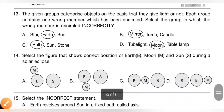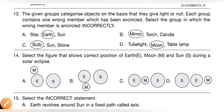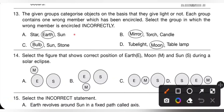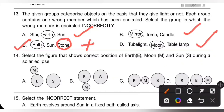13th question: the given groups categorize objects based on whether they give light or not. Each group contains one wrong member which has been encircled. Select the group in which the wrong member is encircled incorrectly. Options A (star, earth, sun), B (mirror, torch, candle), and D (tube light, table lamp, moon) are encircled correctly. Option C (bulb, sun, stone) — the wrong member is encircled incorrectly because stone should be encircled, not another member. So option C is the correct answer.